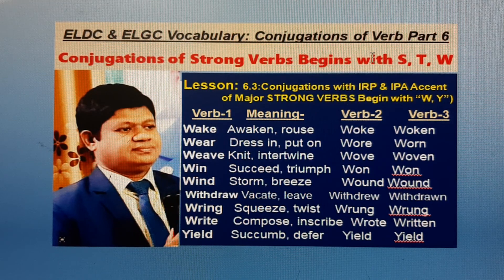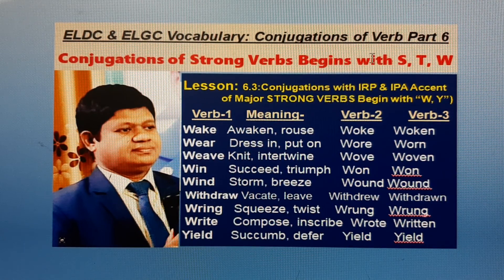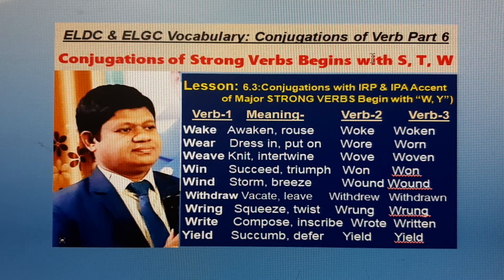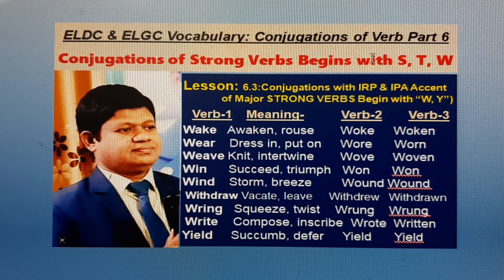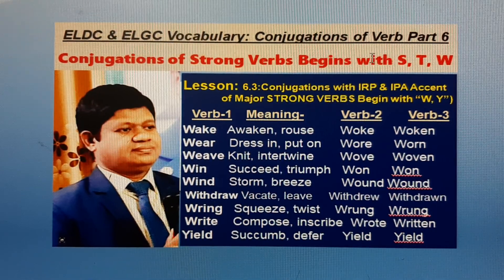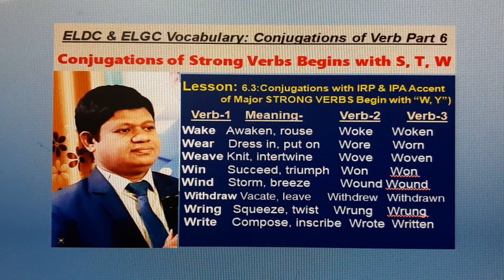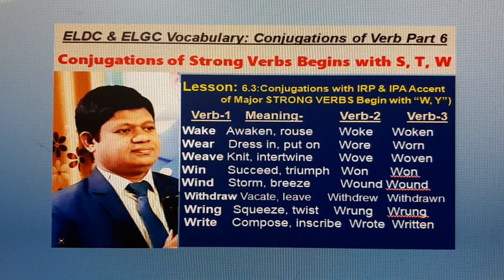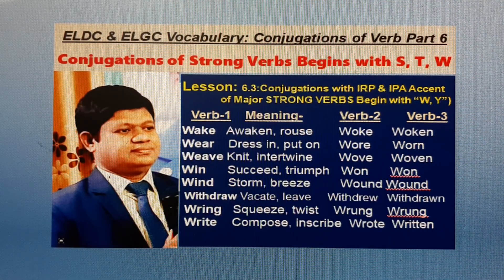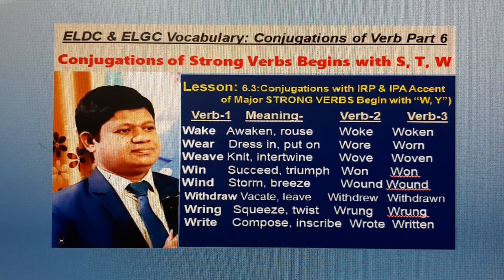Weave B2: Wove. B3: Woven. Verb B1: Win. English meaning: Succeed, triumph, conquer. Bangla meaning: Joy labhkura. B2: Won. B3: Won. Verb B1: Wind. English meaning: Storm, breeze, twist. Bangla meaning: Pakano, mosrano. B2: Wound. B3: Wound.